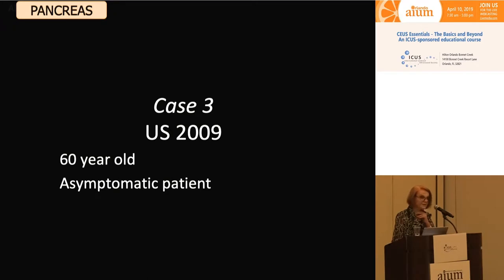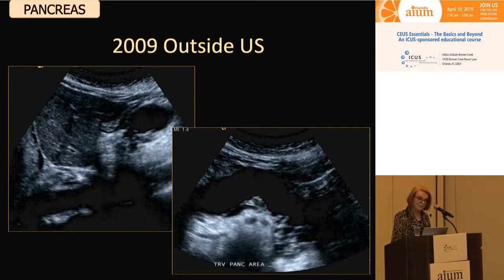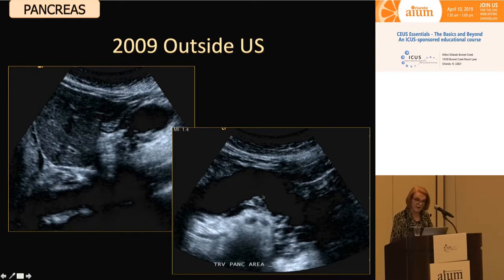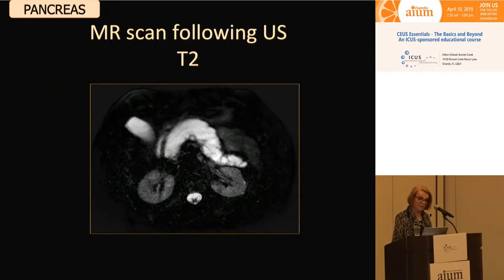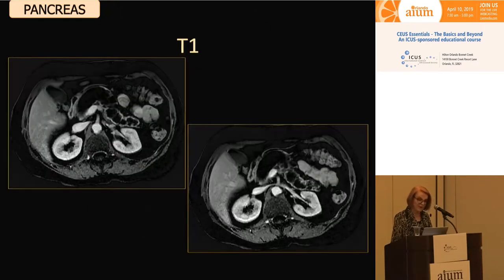This is another really amazing case — a patient with pancreatic pathology. A 60-year-old patient, currently asymptomatic. A 2009 outside ultrasound scan reported a big pancreatic duct. On the long axis and axial view, her pancreas is really made up of this duct, but no comment was made about the solitary papillary growths within the duct. She had an MR scan following the ultrasound: on T2 imaging, virtually her entire pancreas is replaced by a massive dilated pancreatic duct, interpreted as related to a tumor in the pancreatic head.